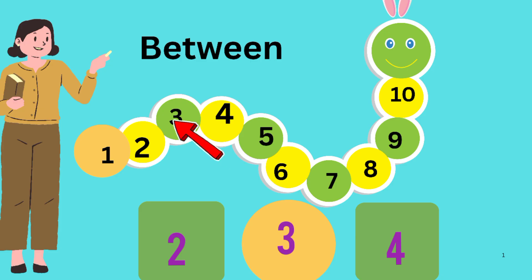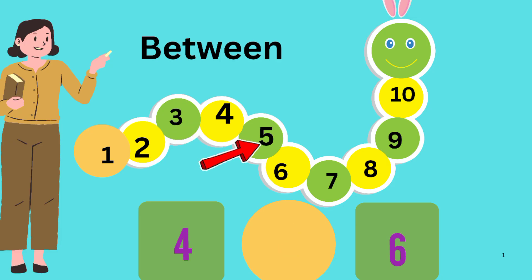3 comes between 2 and 4. What comes between 4 and 6?